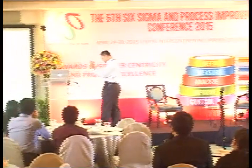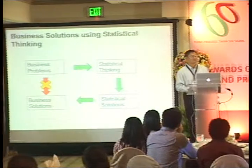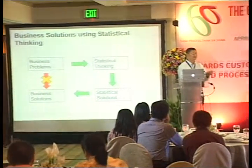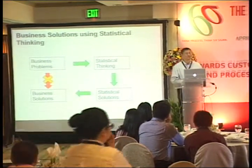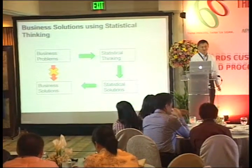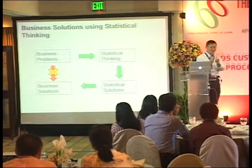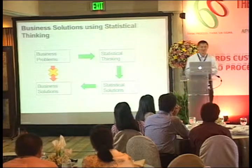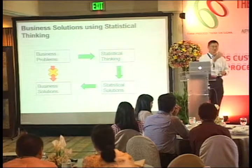Think about this. You typically have a business problem — such as talking about Taylor service, waiting time too long, the defect rate is too high. We have this typical business problem. You don't want to jump to the business solution straight away. It looks like a shortcut, but actually it's not. Most of the time, you're going to generate more problems if you just go to a solution straight away.